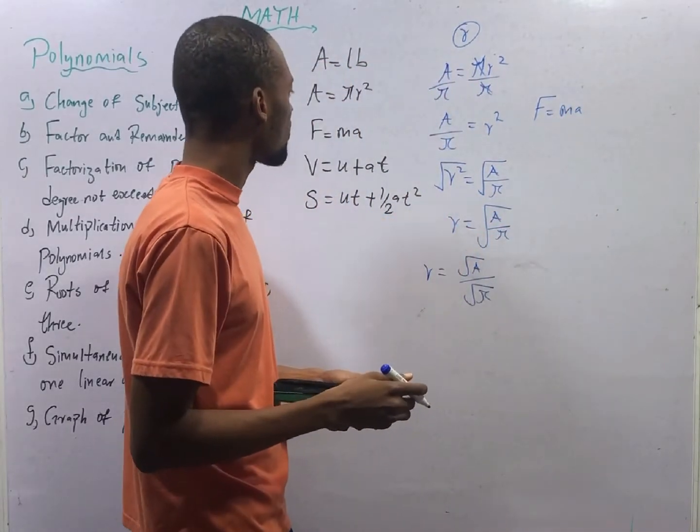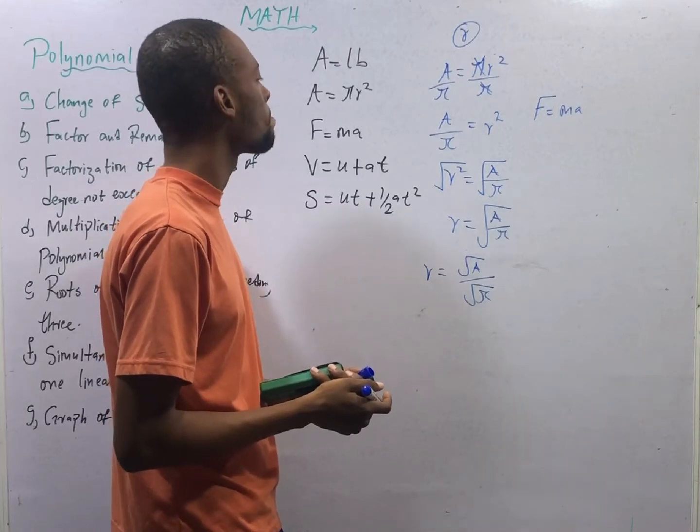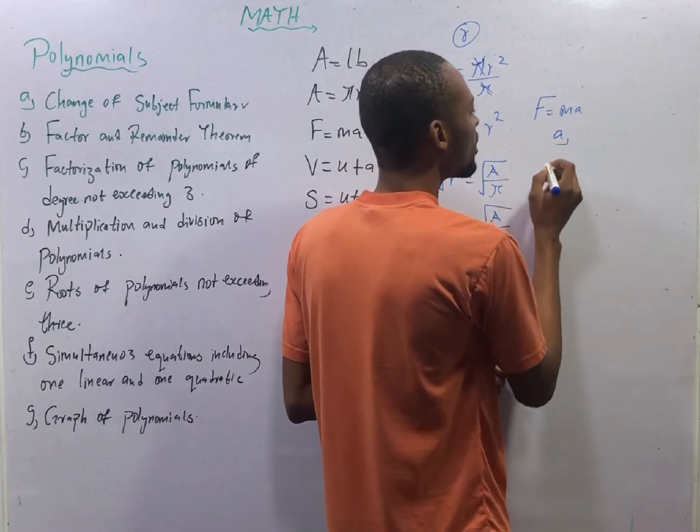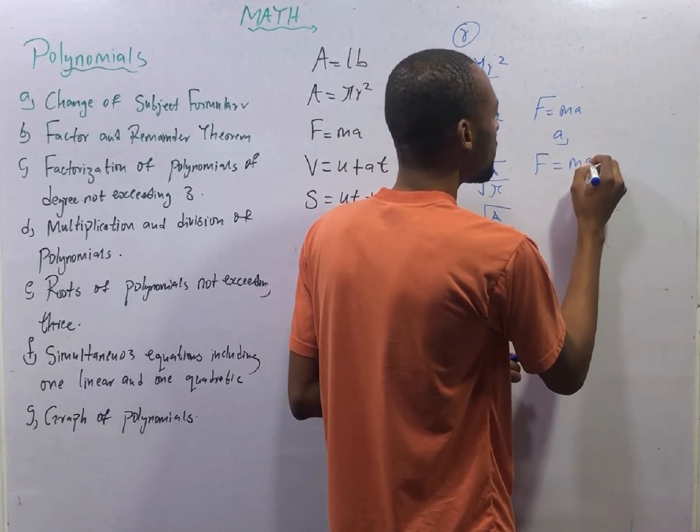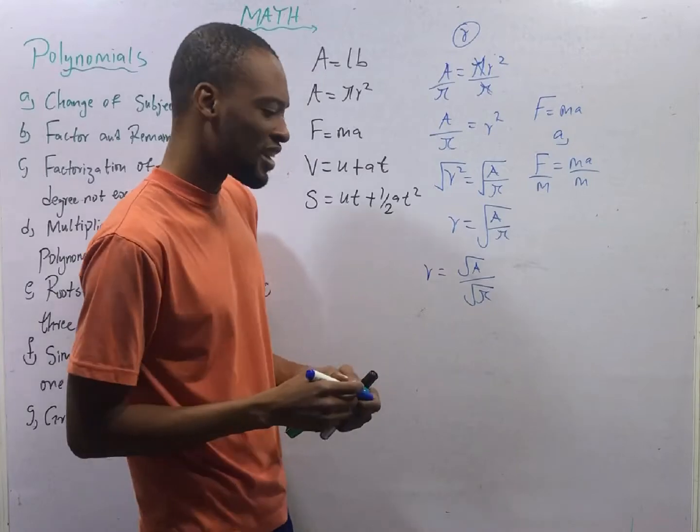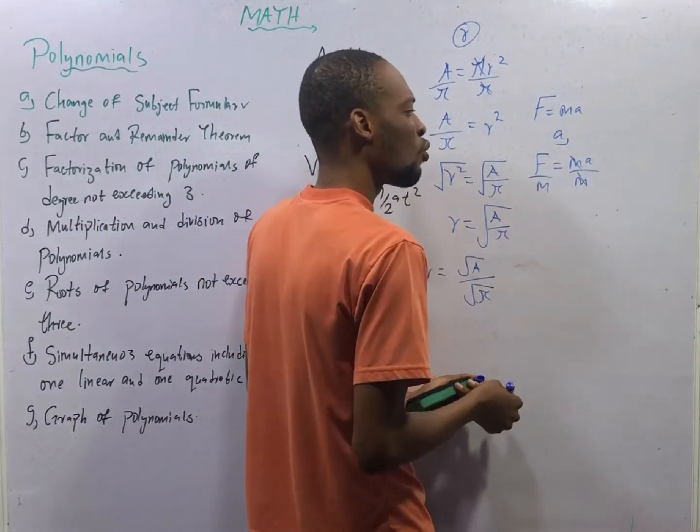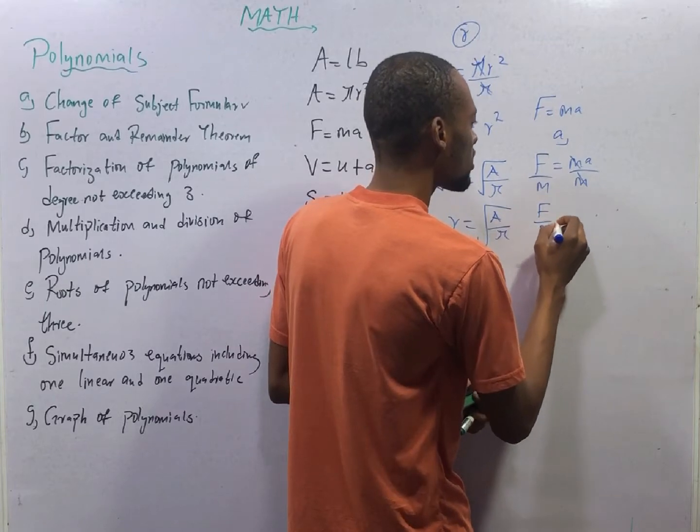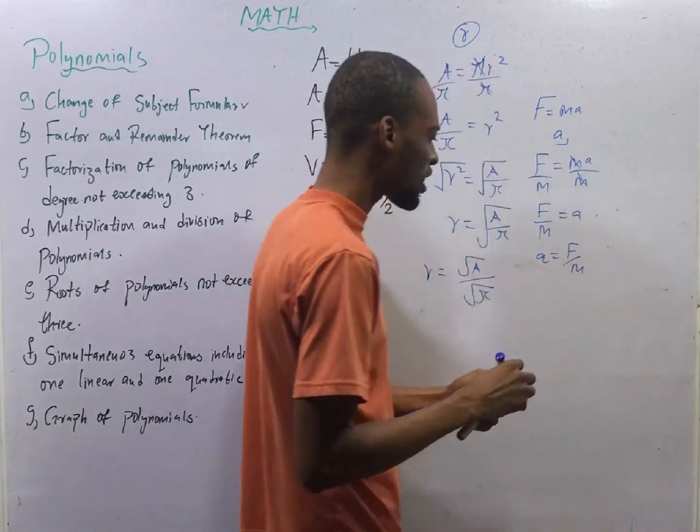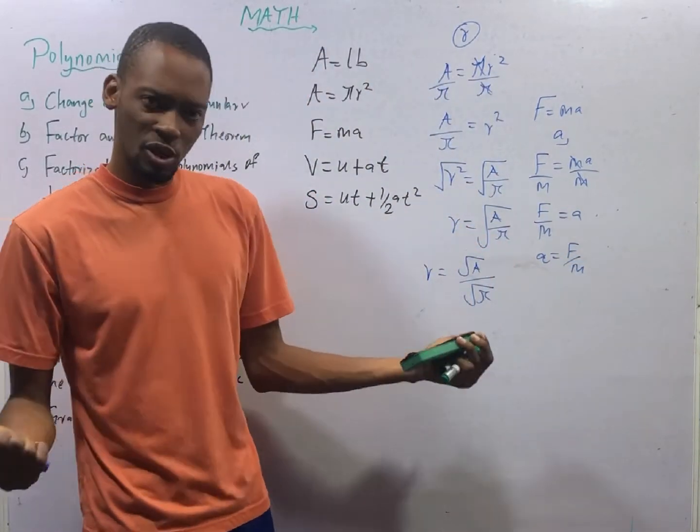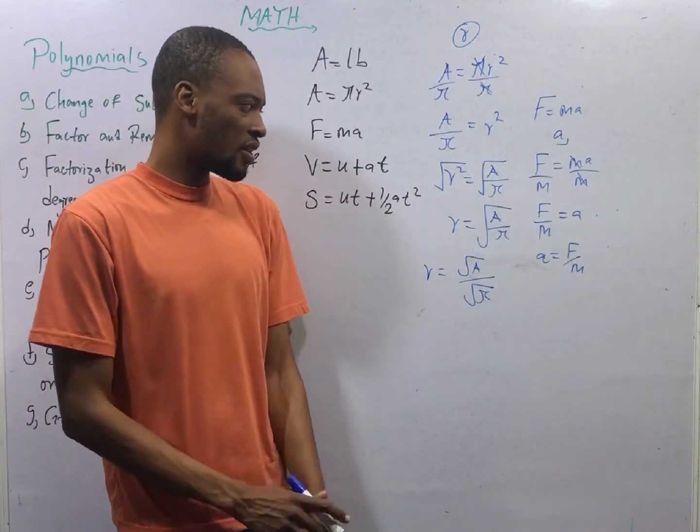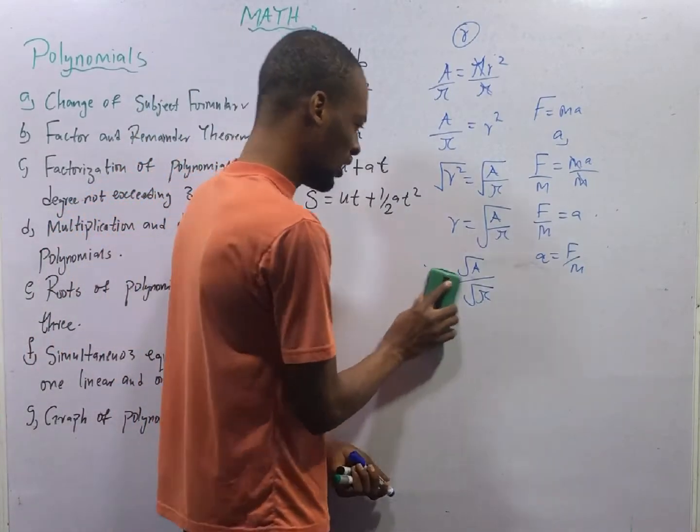If F equals MA, it means that F is subject formula. If I am making A a subject formula, I say from F equals MA, let me divide both sides by M. M divided by M is 1. F over M equals A. And this means that A equals F over M. What have I done? I have made A subject of the formula. I have changed the subject of the formula.